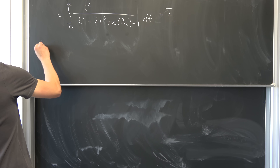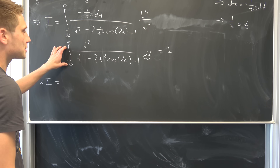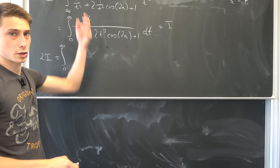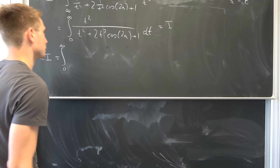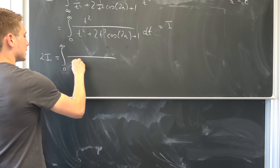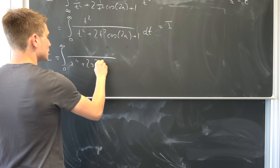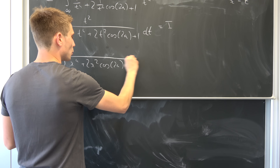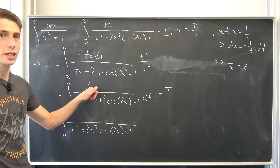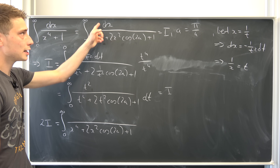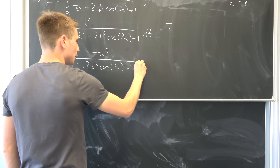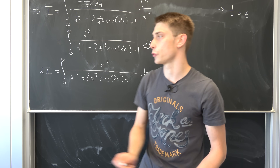We have the same upper and lower bounds, so we have the integral going from zero to infinity. We can add the two integrands together using the linearity of the integral, and we get the same denominator: x to the fourth power plus 2x squared cosine of 2a plus 1. In the numerator we have t squared — now going to be x squared — and we have a 1. So in the numerator we end up with 1 plus x squared dx.